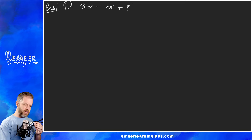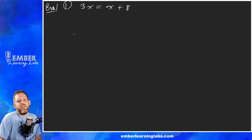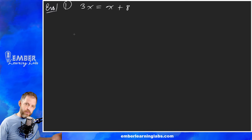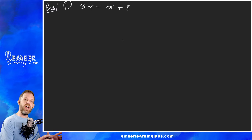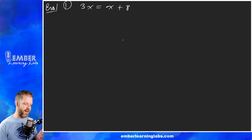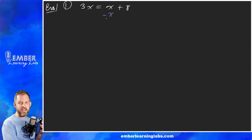We don't like having variables on two sides — we need to get them together. In order to move something from one side of an equation to the other, we either add it or subtract it. So if we want this x to disappear from the right side, we subtract x, because x minus x is zero. Whatever we do to one side, we do to the other.